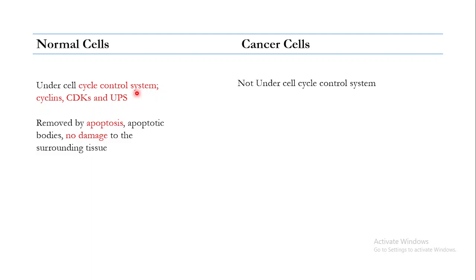The second important difference between normal cells and cancer cells is that when normal cells die, they die by the process of apoptosis, which is a programmed cell death. When these normal cells are removed by apoptosis, apoptotic bodies are formed. These apoptotic bodies ensure that the contents of the dying cells do not damage the surrounding tissue — all of the debris of these dying cells is removed from the body in a controlled manner through these apoptotic bodies.